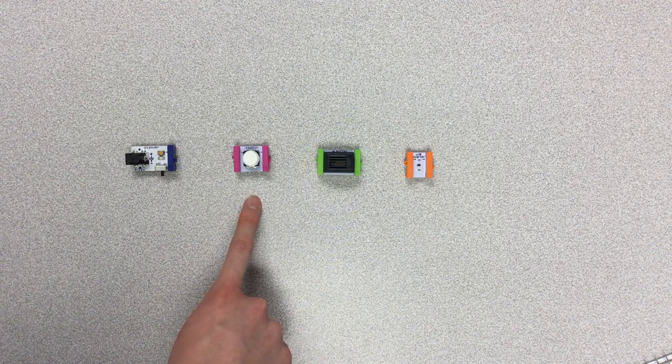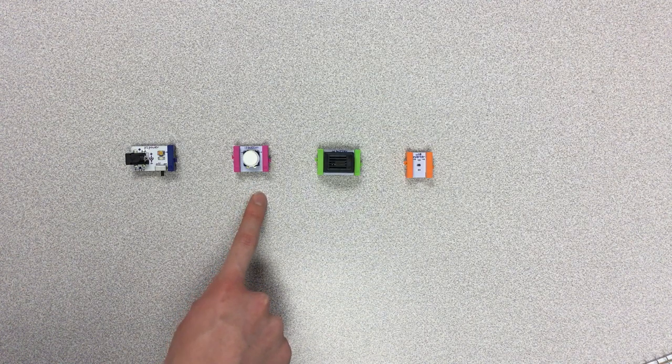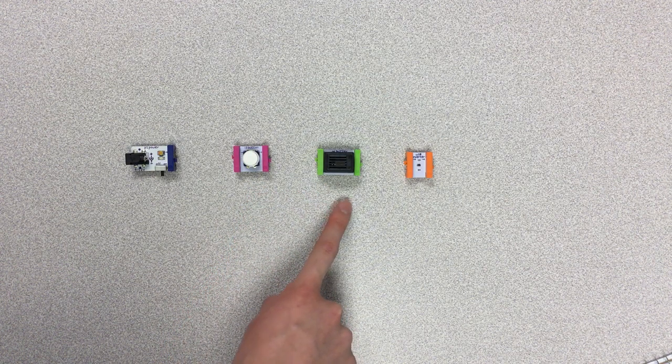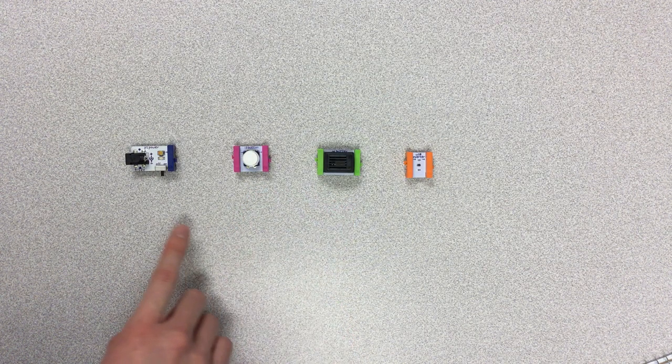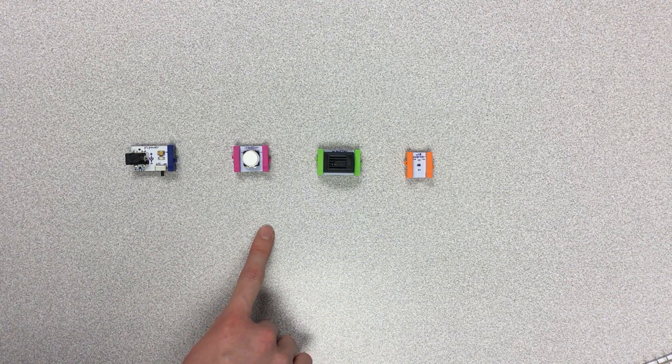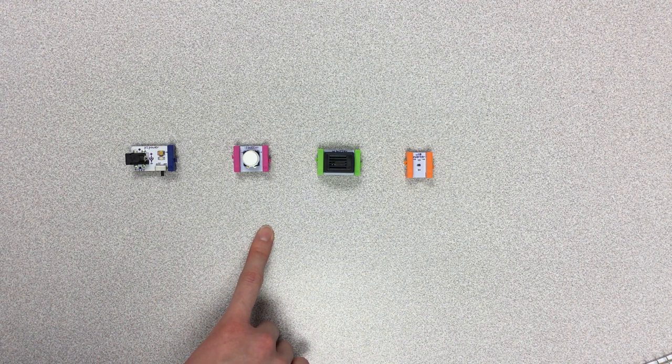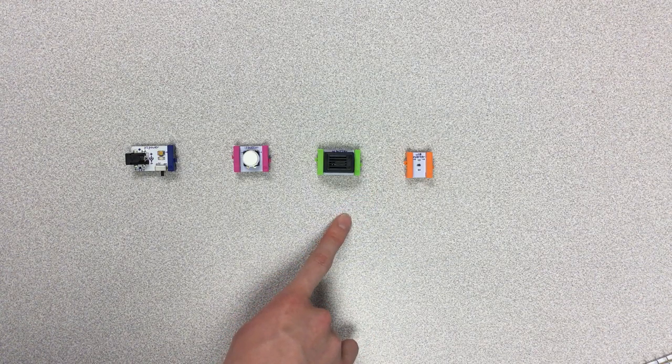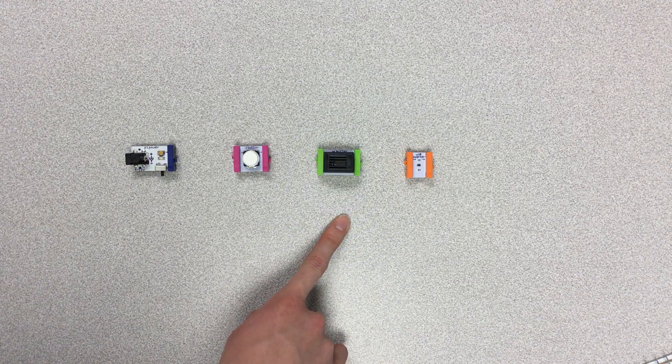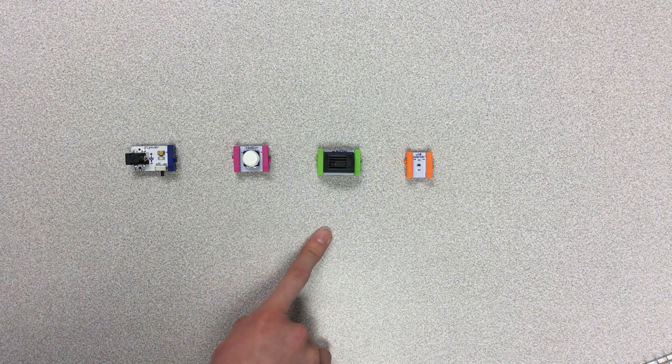So if you had a green one up here, this pink one would not affect it. Then come your green bits, your output bits. They come after the pink ones.